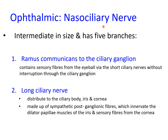The third division of the ophthalmic branch is the nasociliary nerve, which is intermediate in size compared to the frontal and lacrimal branches, and has five divisions. Firstly, there is a communicating branch to the ciliary ganglion, which contains sensory fibers from the eyeball via the short ciliary nerves, passing without interruption through the ciliary ganglion. The ciliary ganglion is one of the four parasympathetic ganglia and is discussed in detail in relation to the eyeball in the presentation on the facial nerve.